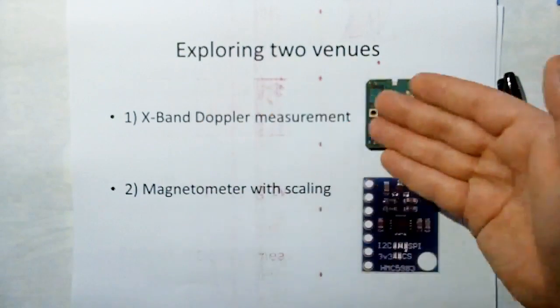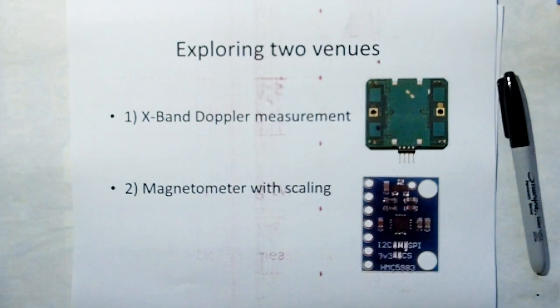And the two venues is the X-band Doppler measurement. And using the magnetometer, we've got to do proper scaling to get everything down and even perhaps go up in frequency. And that might be an option there.